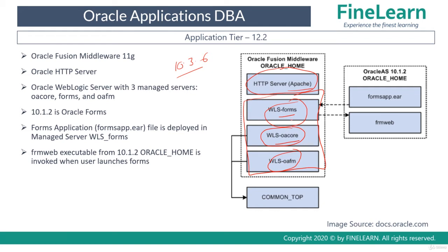Based on the type of request received by the application tier, the managed servers within the EBS WebLogic domain receive the request, process it, and send back the required output to the end user. There is also the 1012 Oracle Home, which is the application server 10.1.2.